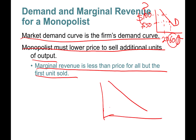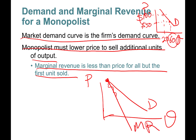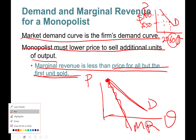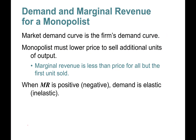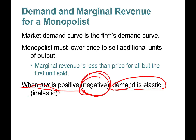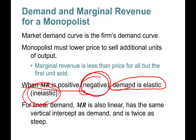Your demand curve shows price per unit versus quantity demanded. Marginal revenue starts at the same point as the demand curve but is lower for all but the first unit sold — exactly at the first unit they are at the same level. When marginal revenue is positive, demand is elastic; when marginal revenue is negative, demand is inelastic.